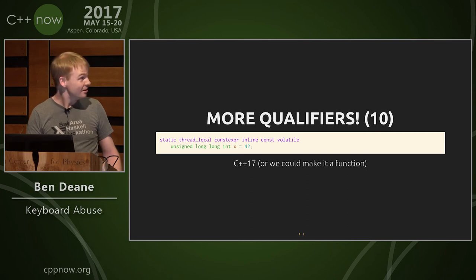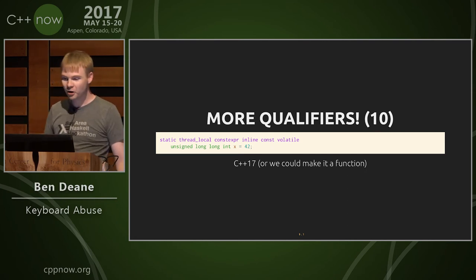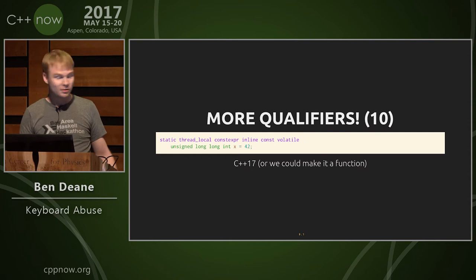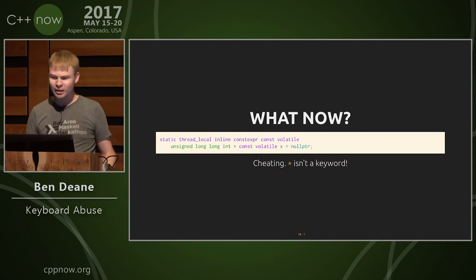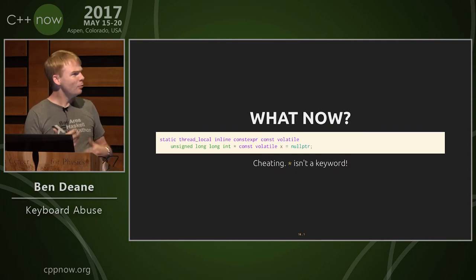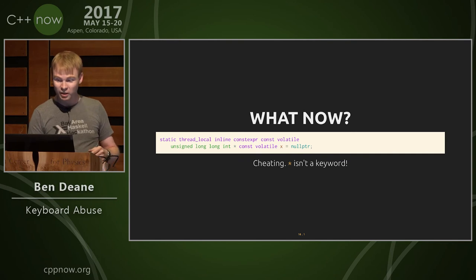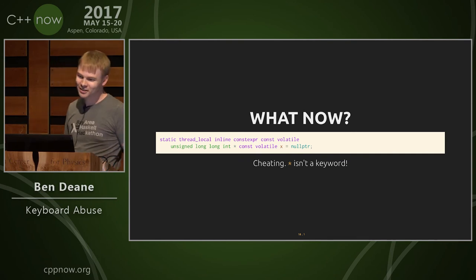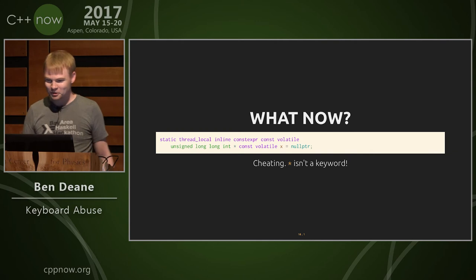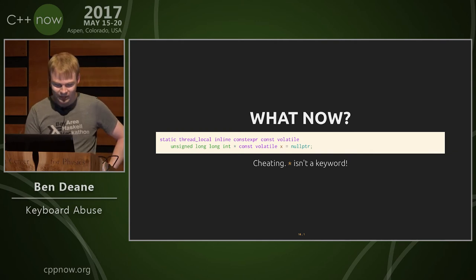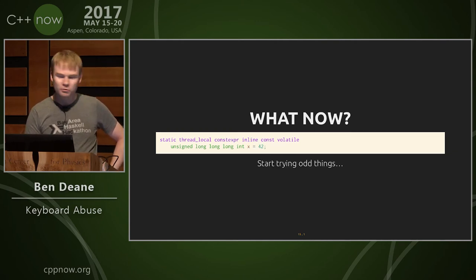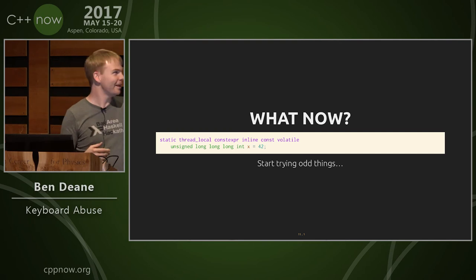C++11 qualifiers, we can have a couple. C++14 qualifiers, 17 — we can make an inline variable or a function. So I'm up to this point and I'm thinking, what else? I've got const volatile in there. If I make it a pointer I can put const volatile, but that's cheating because star isn't a keyword. What if I put an extra long in there?